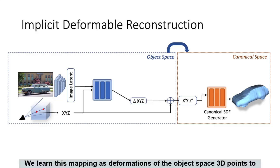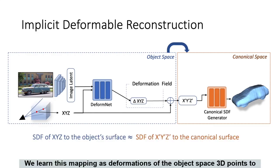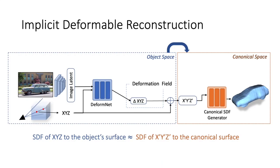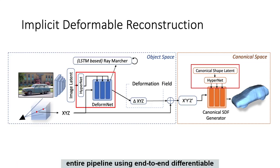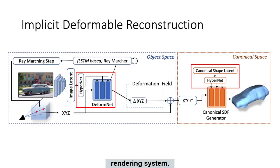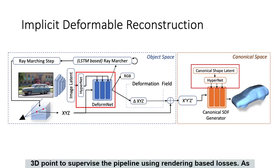We learn this mapping as deformations of the object space 3D points to the canonical space, using signed-distance field as a functional mapping. We represent both the implicit MLPs using hypernetworks and train our entire pipeline using end-to-end differentiable rendering system. We also learn an RGB value for each 3D point to supervise the pipeline using rendering-based losses.